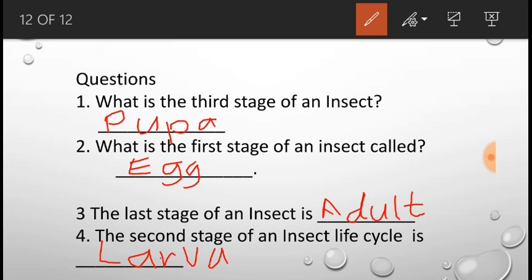So these are the stages of the life cycle of an insect: egg, larva, pupa, and adult. Hope you have a nice time!